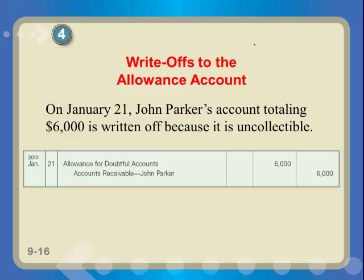In January, the next accounting period, Mr. Parker's account of $6,000 is written off because it's uncollectible. We're taking it out of accounts receivable and also out of the allowance account, because that $30,000 represents what's in the $200,000. We take the $6,000 out of both. When we write off a bad debt using the allowance method, we debit allowance and credit accounts receivable. This removes it from his account — he doesn't owe us anymore.